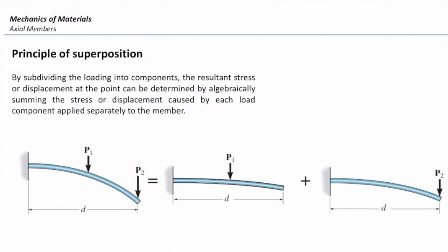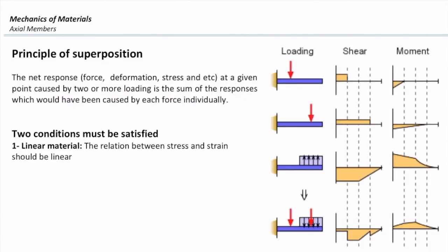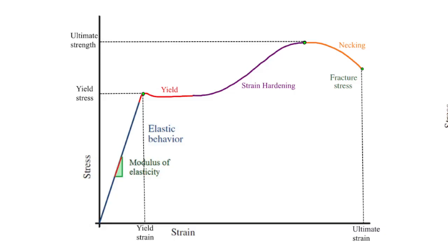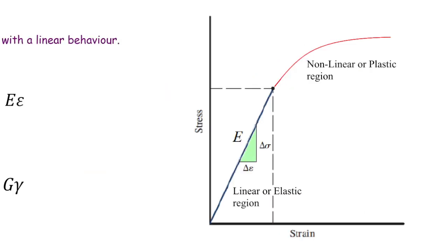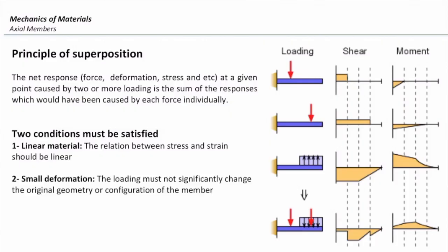To use this principle, two criteria must be met. First, linearity — the material must be linear. In the stress-strain curve, if we remain in the first region, which is the elastic region, the material is linear, meaning stress and strain are proportional. In mechanics of materials we always assume materials are linear and do not pass the yield point. So the first criterion is always met.